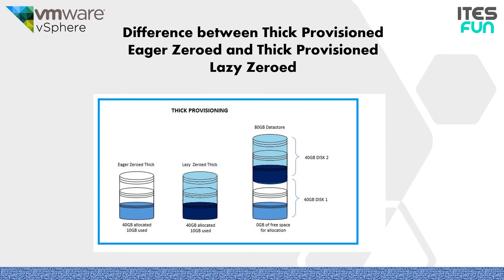Now the difference between thick provisioned eager zeroed and thick provisioned lazy zeroed disks: if we create and allocate 40 GB of hard disk space, the lazy zeroed disk occupies the entire space but blocks containing older data on the storage device are only cleared when the virtual machine writes new data to the disk for the first time. But the eager zeroed disk also occupies the entire disk space; however, the blocks on the physical storage device are formatted with zeros at the time of hard disk provisioning itself, overwriting any older data.